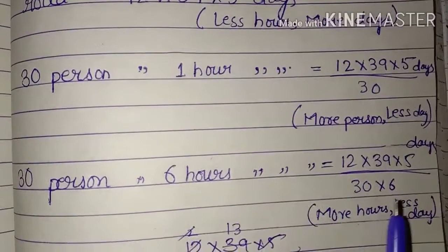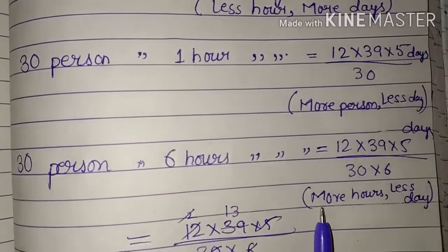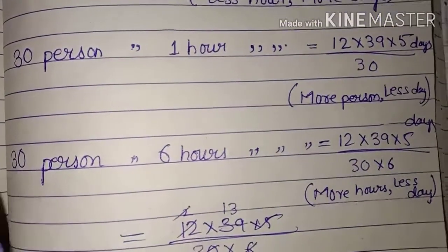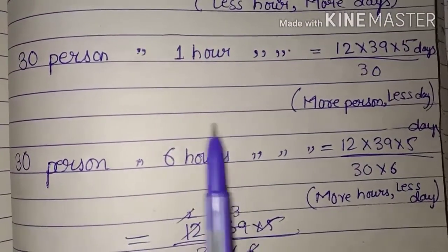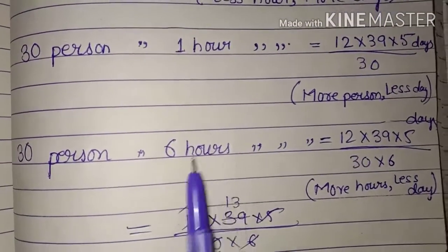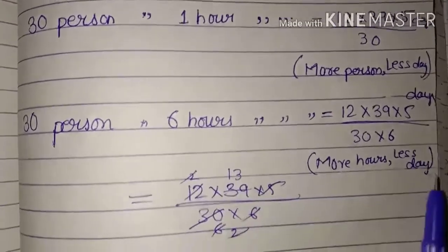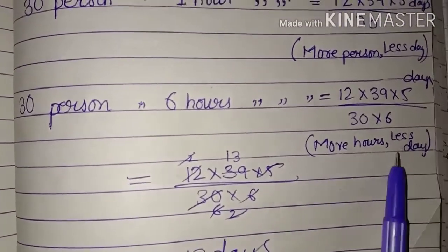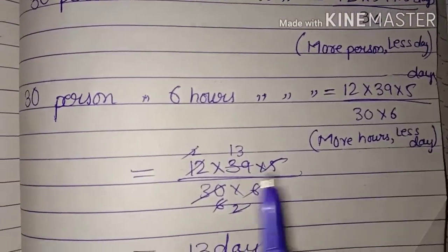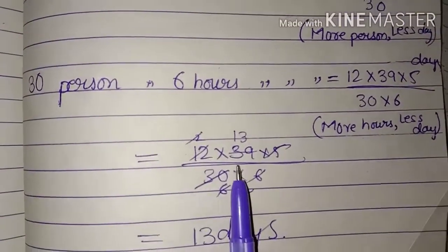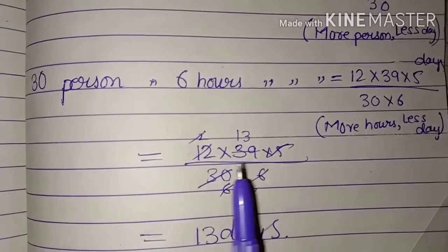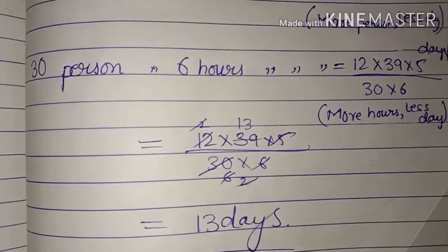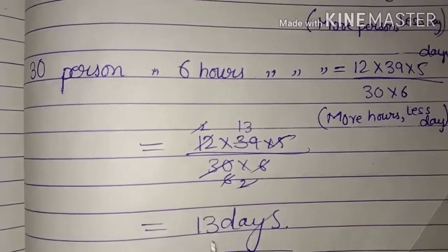With more workers and more hours, there will be more hours and less days required. Therefore, 12 × 39 × 5 upon 30 × 6 gives us the answer — we can complete the work in 13 days.